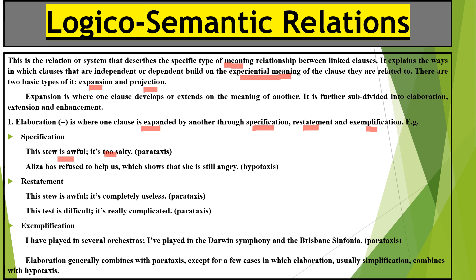Restatement: 'This test is difficult — it's really complicated.' Here we just say the same thing in a different form using a synonymous word, emphasizing it again. Exemplification: 'I have played in several orchestras — I have played in the Darwin Symphony and the Brisbane Sinfonia.' Here in the next clause I exemplified where I have performed.